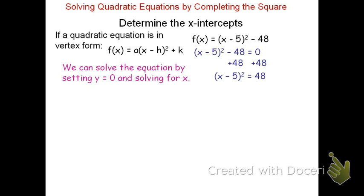Now to undo the square, we'll use the inverse of squaring. The opposite of squaring would be square rooting, so we'll take the square root of both sides. However, when you square root a square, you get two answers. We'll get x - 5 = ±√48.